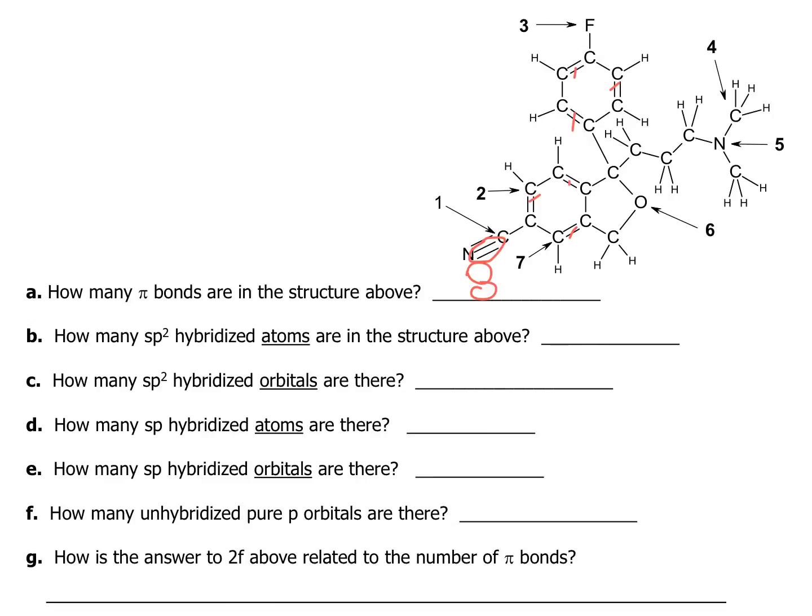If I want to know how many sp2 hybridized atoms are in the structure above, that means I'm looking for things with three electron regions. So let me look at that carbon: one, two, three, four, five, six, seven, eight, nine, ten, eleven, twelve. Can't spot any more, because remember that oxygen has lone pairs and that nitrogen has a lone pair. So I believe I am at twelve.